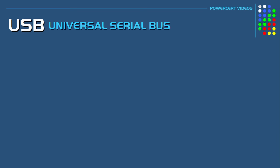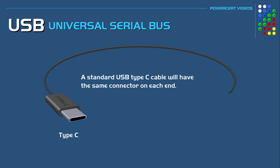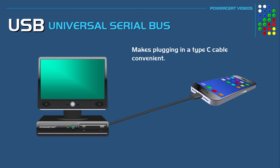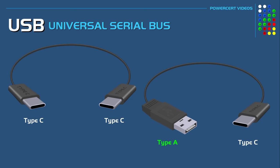As stated earlier, typically USB cables will have different connectors on each end, with the Type-A at one end and a different type on the other. However, a standard USB Type-C cable will have the same connector on each end, because the Type-C can be connected to a host — meaning a computer — at one end and to another device on the other end. This makes a Type-C cable convenient because both ends are the same and you don't have to figure out which end goes where. However, you will still find USB cables with Type-A at one end and Type-C on the other.